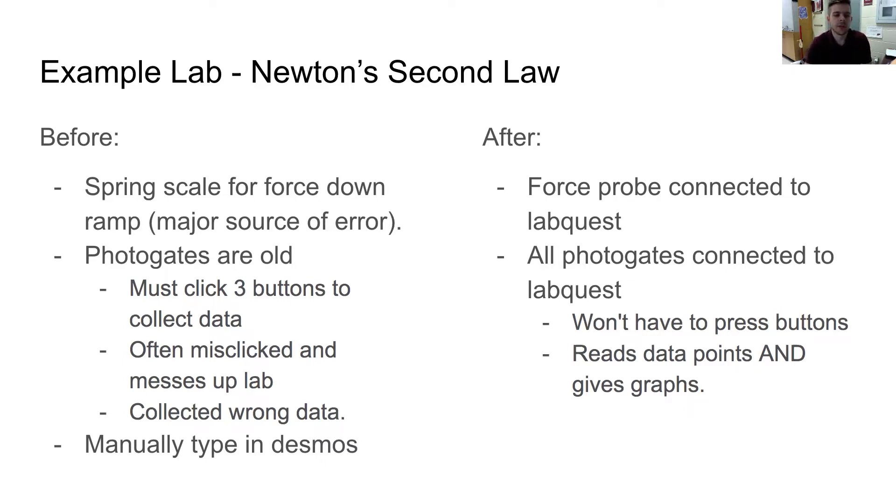And the photo gates that I use are really old. You got to click three buttons to collect the data. If you misclick one of those buttons on accident, you mess up the lab and you have to rerun the trial. It's really easy to mix up the data because it's not labeled. If you're getting two separate times from the old photo gates, if you mix up those times, your whole lab is ruined. It can't be done.